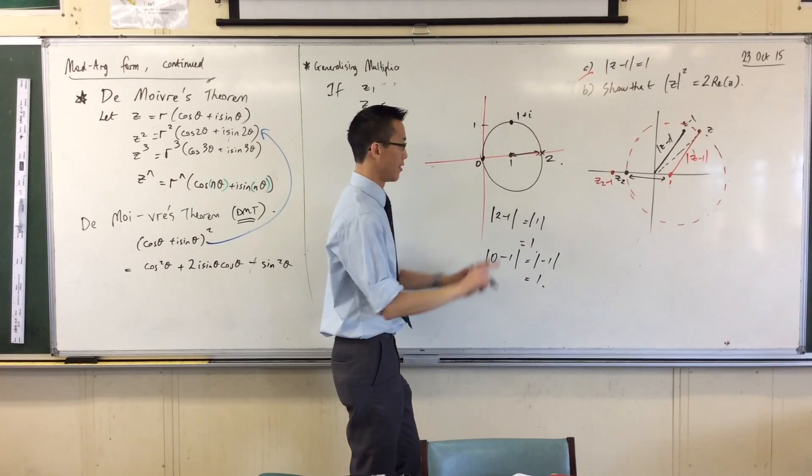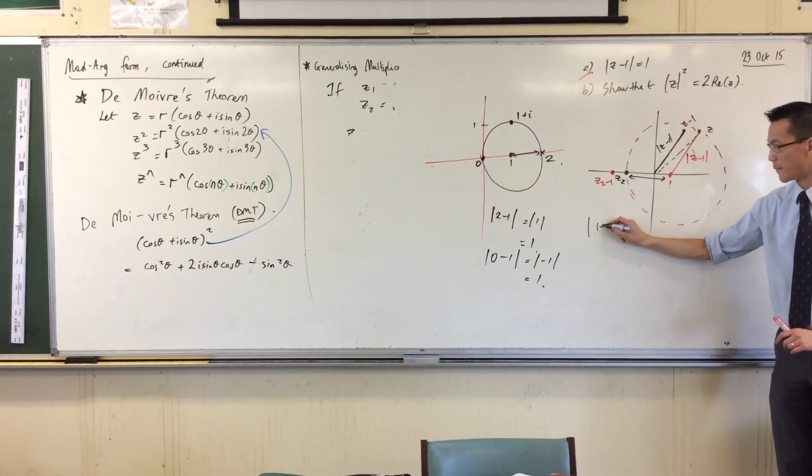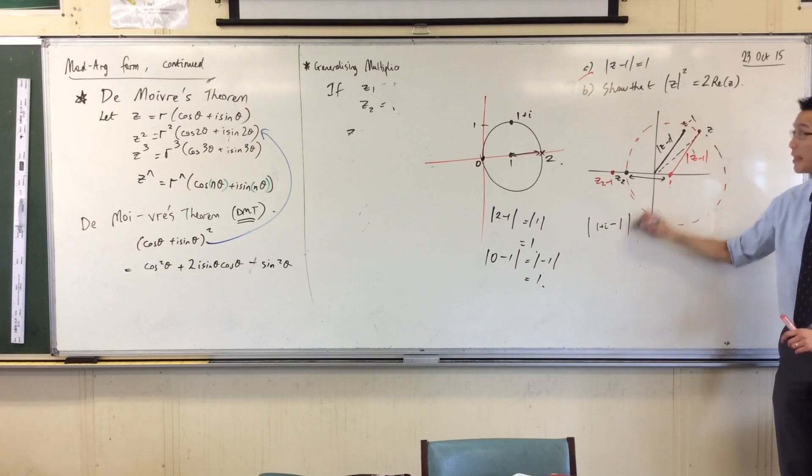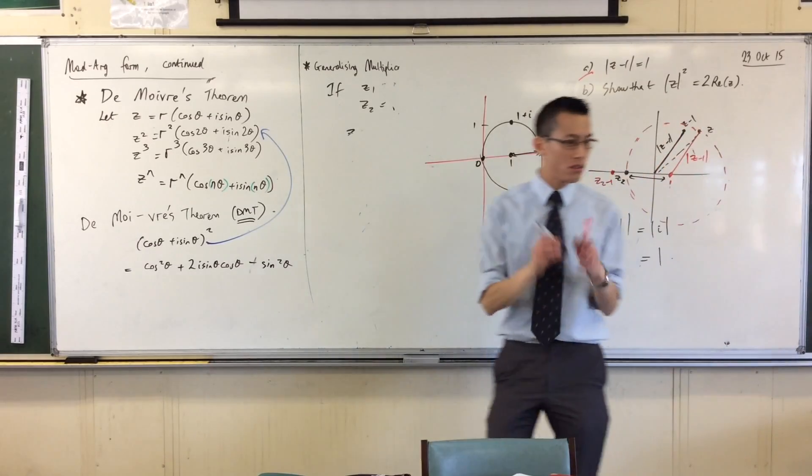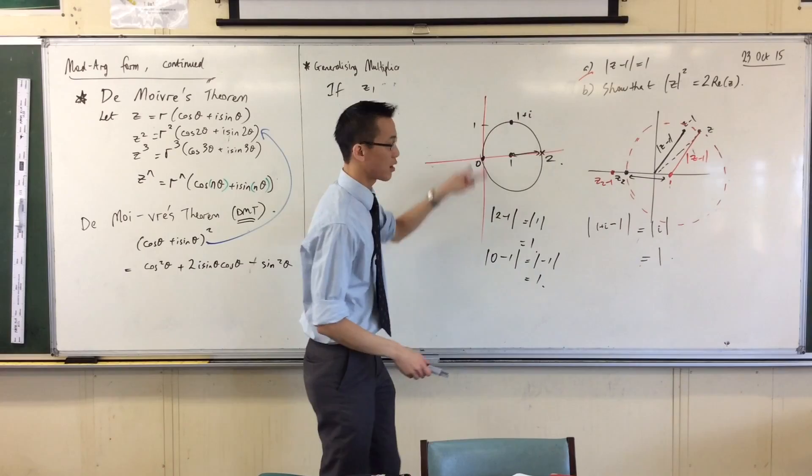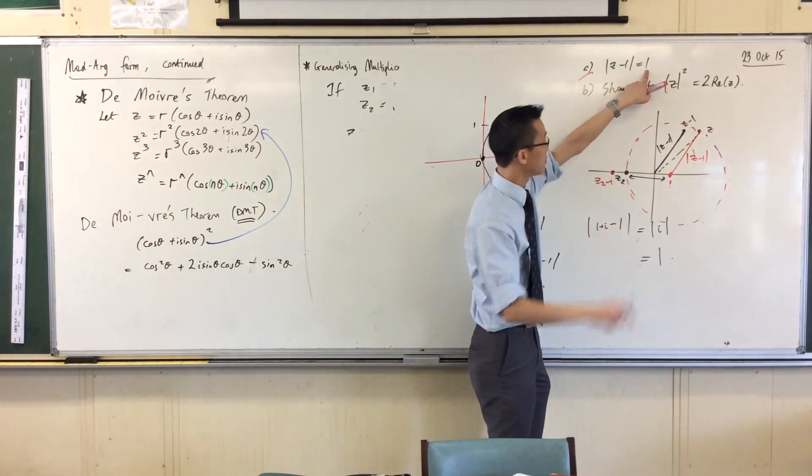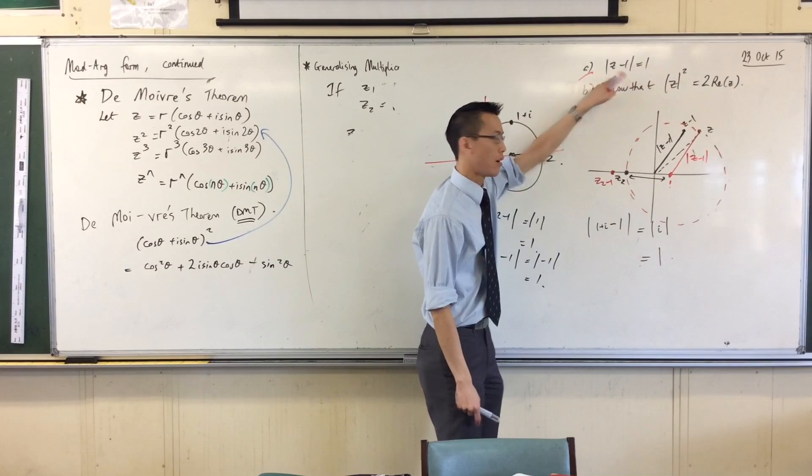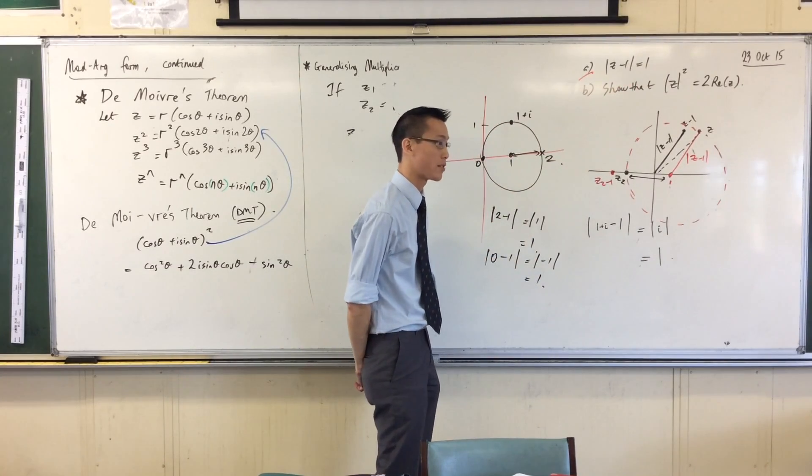So do you see, this is the locus of points that is equidistant. They're all one, but they're not around the origin anymore. I've been horizontally shifted. I've been translated, actually is a better way of saying it.